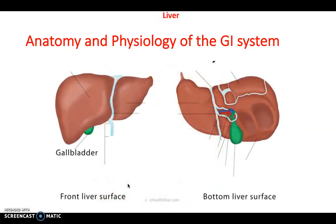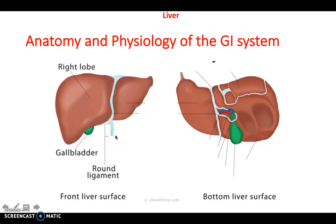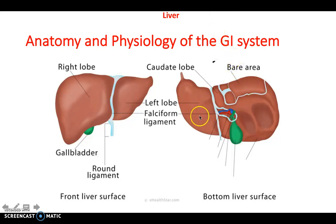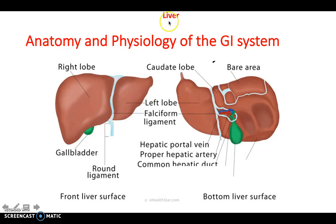The liver can be anatomically divided into right and left lobes, as well as quadrate and caudate lobes. The gallbladder is tucked behind on the anterior view. The falciform ligament divides the left and right lobes, and there's a round ligament extending below the liver. The bare area on top is in communication with the diaphragm and is the only retroperitoneal part of the liver. The hepatic portal vein, proper hepatic artery, and common hepatic duct are key structures — the hepatic portal vein is vital for venous drainage of the GI system, passing through the liver sinusoids before returning to the inferior vena cava.